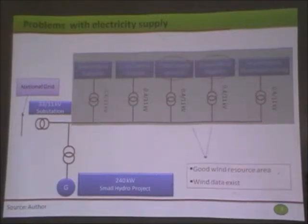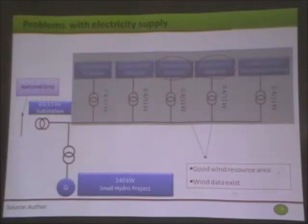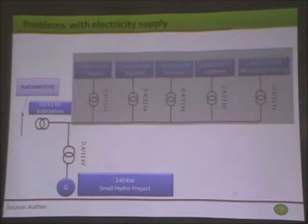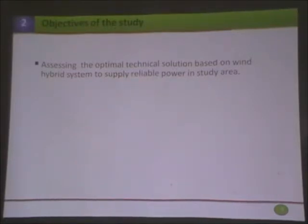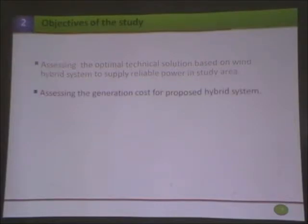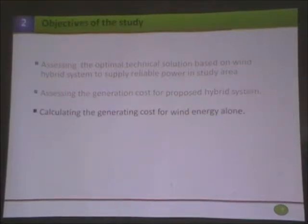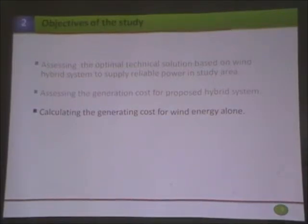It should be noted that load centers like Jomsom and Taggrini have very good wind resources in Nepal. Interestingly, we have wind data for more than five years in that area. The objective of the study was to assess the optimal technical solution based on a wind hybrid system to supply reliable power in the study area, and to assess the generation cost of the proposed hybrid system. We also calculated the generation cost of wind energy alone, and analyzed the financial viability of the wind energy system to inform policy support.